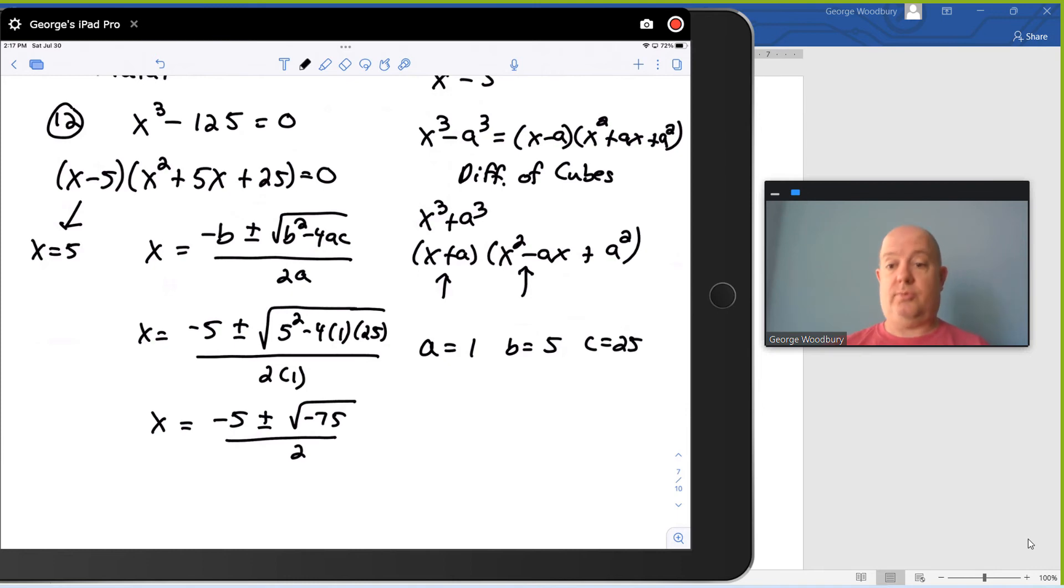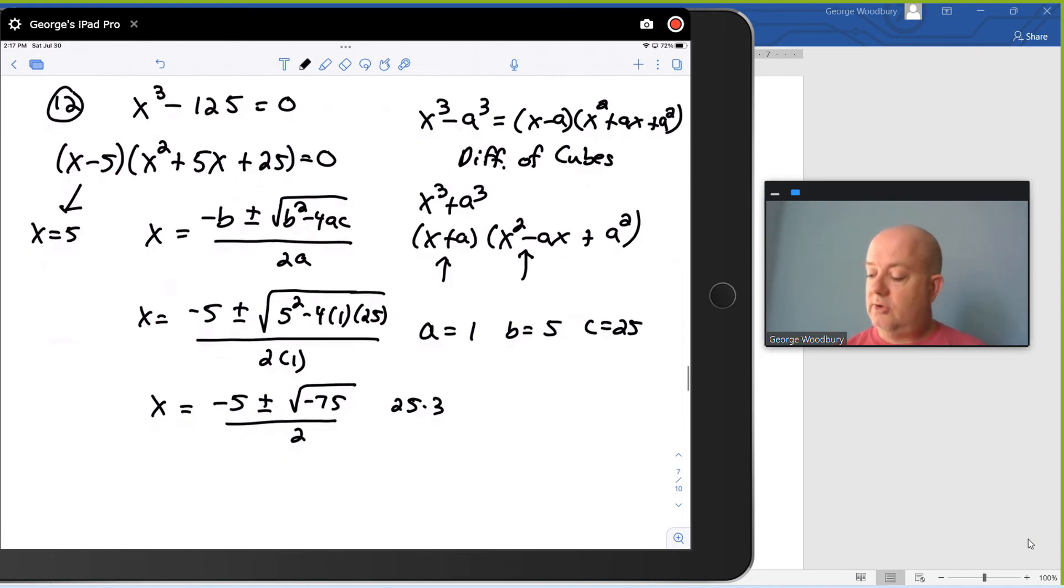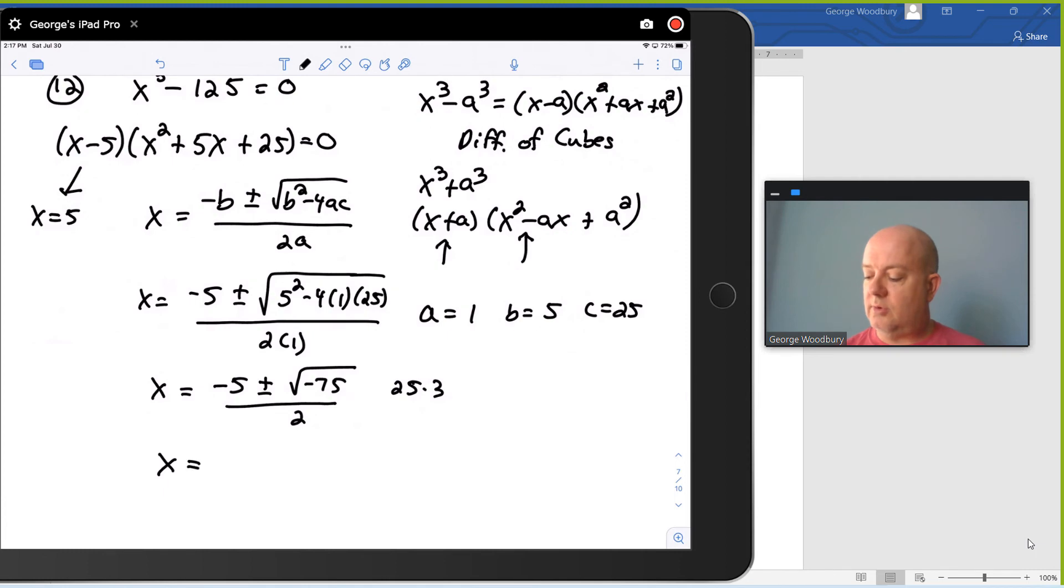There's a negative inside the square root, so that's going to come out as an i. 75 is 25 times 3, and we know the square root of 25 is 5. So that gets us to x equals negative 5 plus or minus 5i square root of 3 over 2.